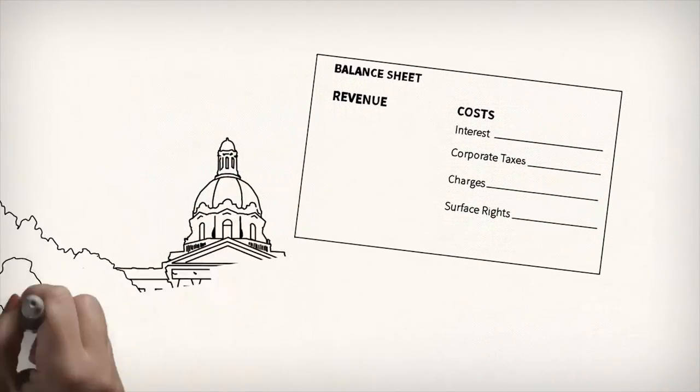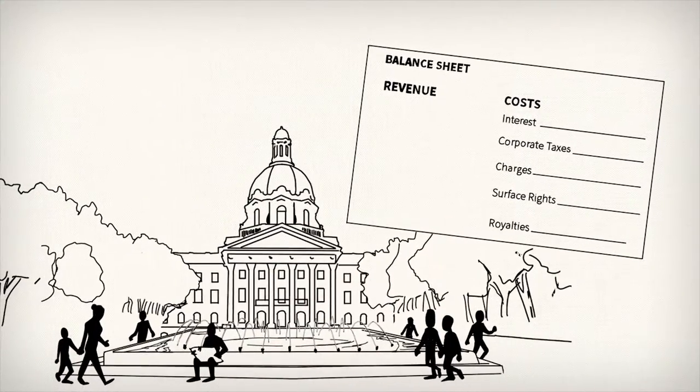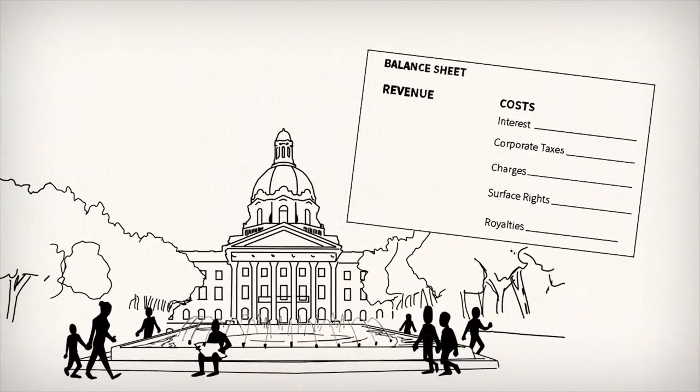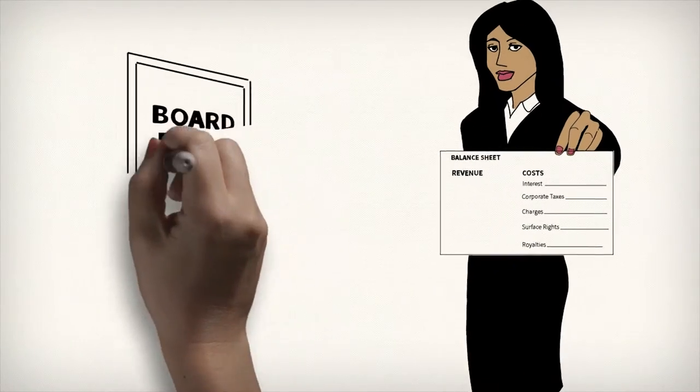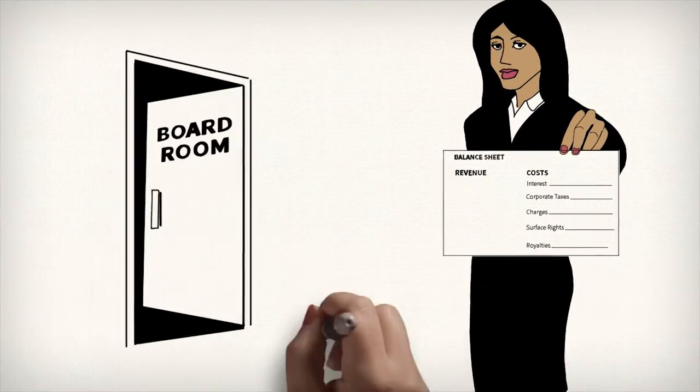And of course, the company is going to pay royalty to Albertans. All those operating costs, charges and fees are taken out of the total value. And whatever's left is the cash flow the company has left to work with.